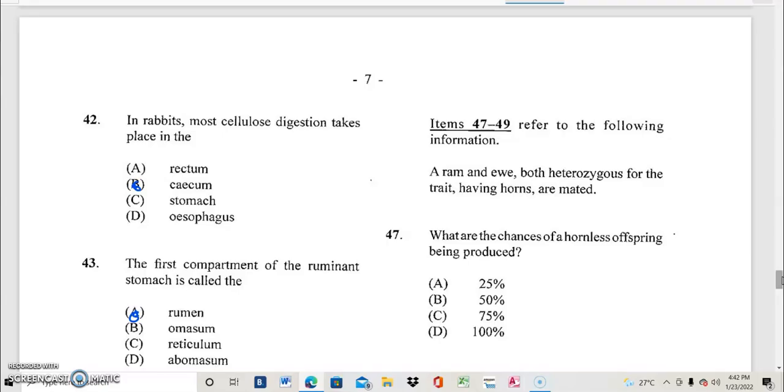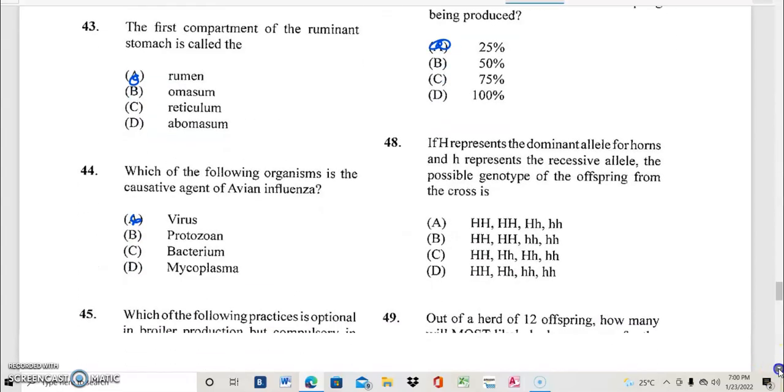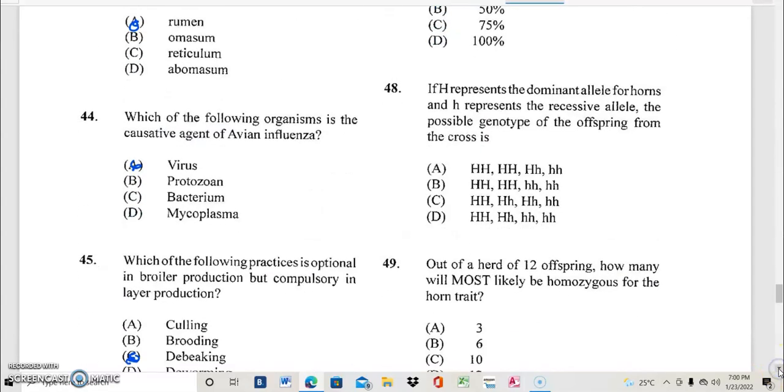Question 47. Items 47 to 49 refer to the following information: a ram and a ewe, both heterozygous for the trait having horns are mated. Question 47: What are the chances of a hornless offspring being produced? And the answer to question 47 is A, 25%, there's a 25% chance.